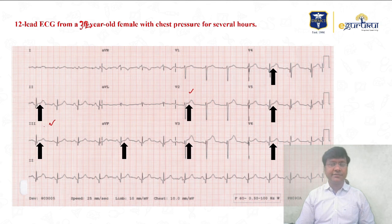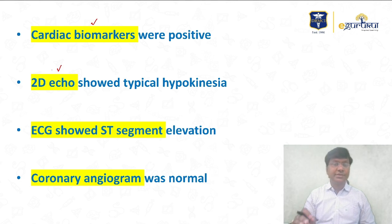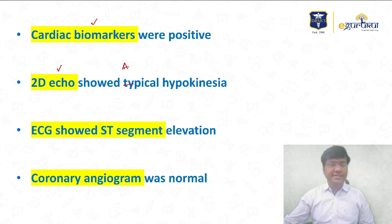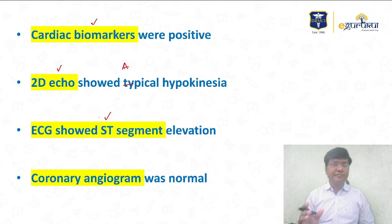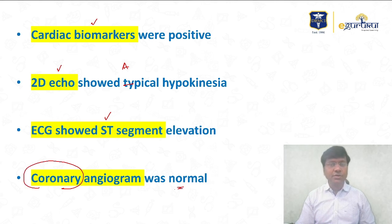With this clinical scenario, I performed cardiac biomarkers, which were positive. I also did a 2D echo, which showed transient apical hypokinesia. The ECG showed ST segment elevation. Given this scenario, my first differential diagnosis was coronary artery disease, so I performed a coronary angiogram. However, to my surprise, the coronary angiogram was absolutely normal.